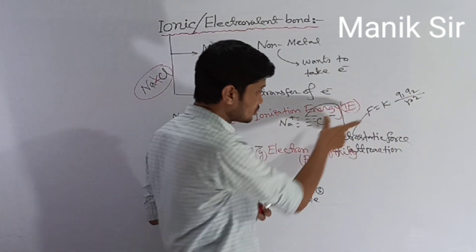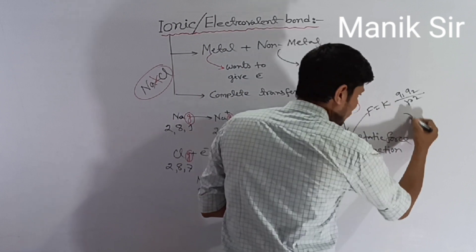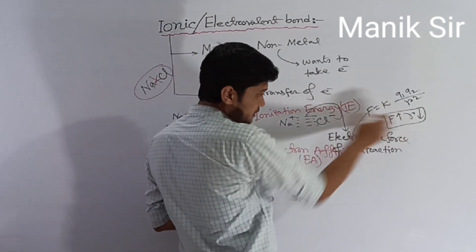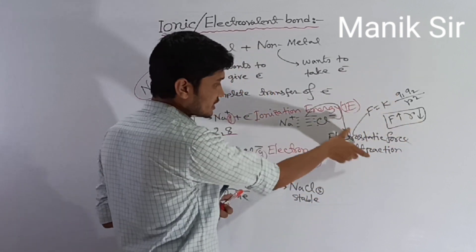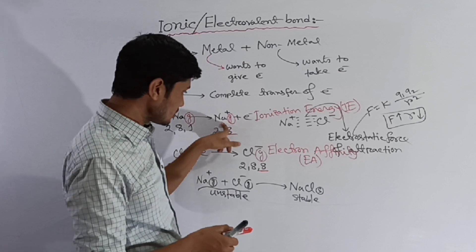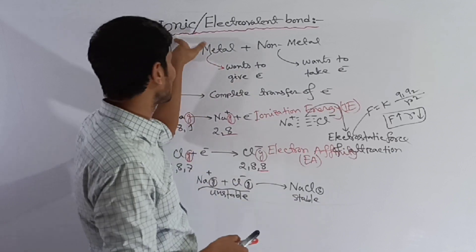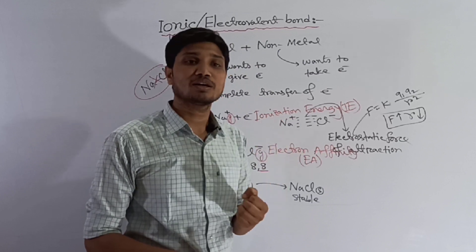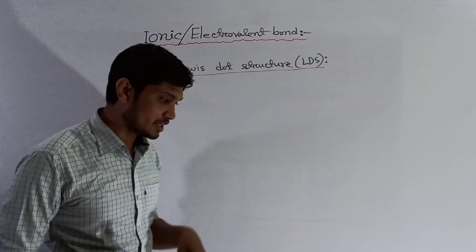Ionic bonds can be represented using Lewis dot structures. For sodium chloride, sodium plus and chlorine minus are shown with their electron configurations around them. The electrostatic force of attraction between the oppositely charged ions is illustrated, showing how the ionic bond is formed between sodium and chloride.